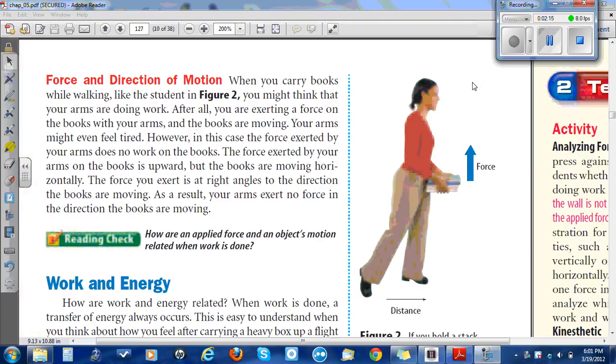Force and direction of motion. When you carry books while walking, like the student in figure two, you might think that your arms are doing work. After all, you're exerting a force on the books with your arms, and the books are moving. Your arms might even feel tired. However, in this case, the force exerted by your arms does no work on the books. The force exerted by your arms on the books is upward, but the books are moving horizontally. The force you exert is at right angles to the direction the books are moving. As a result, your arms exert no force in the direction the books are moving.